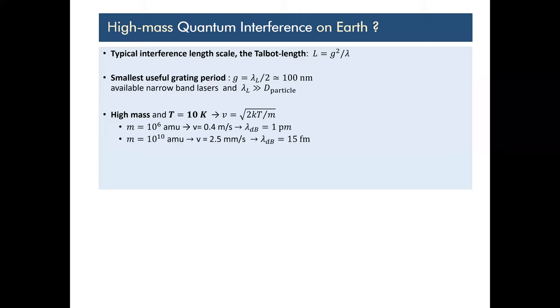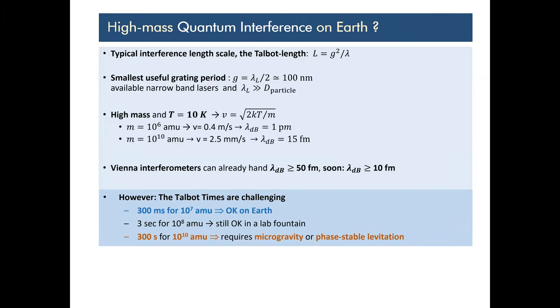But, we hope it will be easy, but it will be a little bit hard. It will be hard because it's not only length, it's also time. The wave function needs time to evolve. And, well, for a 10 to the 7 atomic mass unit particle, this needs roughly 300 milliseconds, with the typical gratings that you can do. For 10 to the 8, 3 seconds. 10 to the 10, 300 seconds. Now, 300 seconds in free fall, that is a deep, deep drop. Three seconds, that still can be done more or less in a lab fountain. And that is one of the motivations to build a lab fountain. There may be other schemes as well.